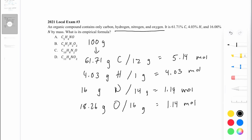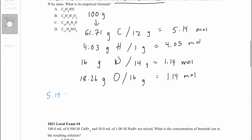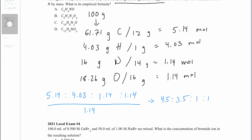Our ratio of moles comes out to 5.14 : 4.03 : 1.14 : 1.14. Since these are not all integers, we divide the whole thing by the lowest number, which is 1.14. The new ratios become 4.5 : 3.5 : 1 : 1. We still have two decimals, so we multiply the entire ratio by 2, giving us 9, 7, 2, 2. So carbon, hydrogen, nitrogen, and oxygen are in a 9:7:2:2 ratio — the empirical formula is C9H7N2O2. That is answer choice B.